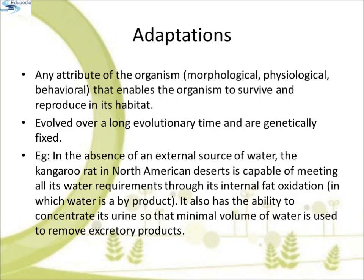Adaptations: While considering the various alternatives available to organisms for coping with extremes in their environment, we have seen that some respond through physiological adjustments while others do so behaviorally, such as migrating temporarily to a less stressful habitat. These responses are also actually their adaptations. An adaptation is any attribute of an organism — morphological, physiological, or behavioral — that enables it to survive and reproduce in its habitat. Many adaptations have evolved over a long evolutionary time and are genetically fixed. For example, the kangaroo rat in the North American desert is capable of meeting all its water requirements through internal fat oxidation, in which water is a by-product. It also has the ability to concentrate its urine so that the minimal volume of water is used to remove excreted products.